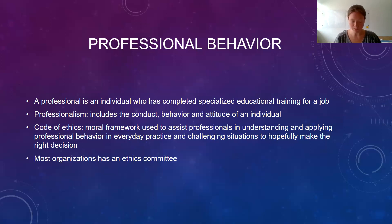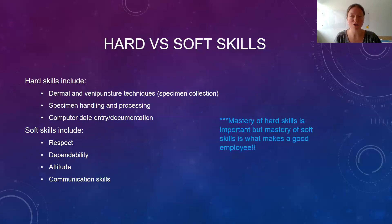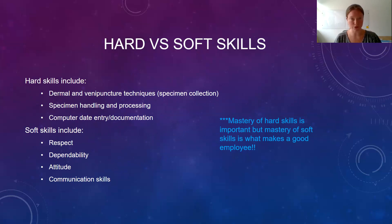There are two types of skills needed in any profession — hard and soft skills. Hard skills are the technical skills required for your profession: specific training as well as operational proficiencies within your scope of practice. Another way to put that is the minimum competencies and proficiencies necessary to do your job. In phlebotomy, that's going to be dermal and venipuncture, specimen collection, specimen handling and processing, and computer data entry. You have to be able to do all those and be good at them.